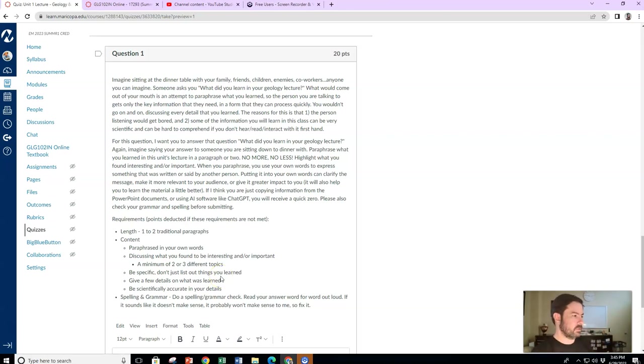Make sure everything is scientifically accurate and you've done some spelling and grammar check. Best way to do that, type it up in like a Word document or a Google document. Do a spelling and grammar check. Copy and paste it in. Make sure everything is good to go. Make sure you're reading over the instructions. You're taking complex information and paraphrasing it in a way that anyone can understand. This is an important skill to have. This is what I want you to focus on. Don't make it sound all science-y for science sake. Think of it as a normal conversation.